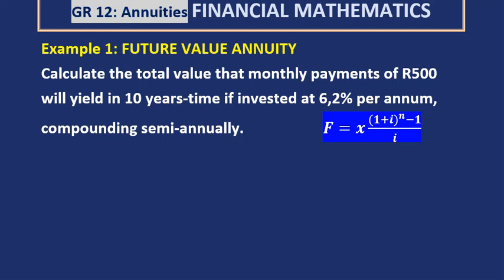Welcome to the final part of financial maths, grade 12 annuities. What an annuity is, is a regular payment. In grade 10 and 11 when we did financial maths, we did not have many payments — there was only one payment or one investment. But with annuities we've got many payments, usually made monthly. Every month there's a payment, so that's what an annuity is.